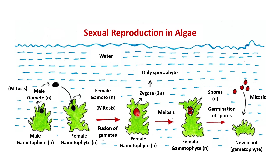Now the zygote undergoes meiosis and forms four haploid spores. The female gametophytic algae releases these spores. Each spore on germination undergoes mitosis and generates a new haploid gametophyte — it could be either male or female. That means gametophyte is formed from sporophyte via spores. I hope you could understand the concept. Thank you.